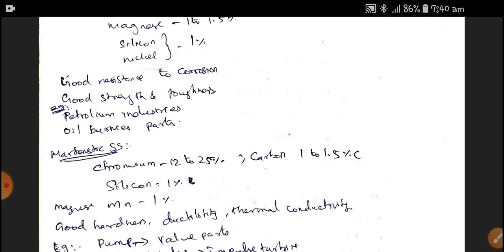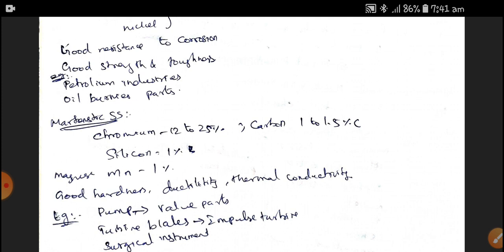Martensitic Stainless Steel has a decent amount of Chromium of 12 to 25%, Carbon of 1 to 1.5%, Silicon, and Magnesium of 1%. It has good hardness, ductility, and thermal conductivity. Pump parts like valves, turbine blades, impulse turbine blades, and surgical instruments are made up of Martensitic Stainless Steel. It is also a less corrosion-prone material.